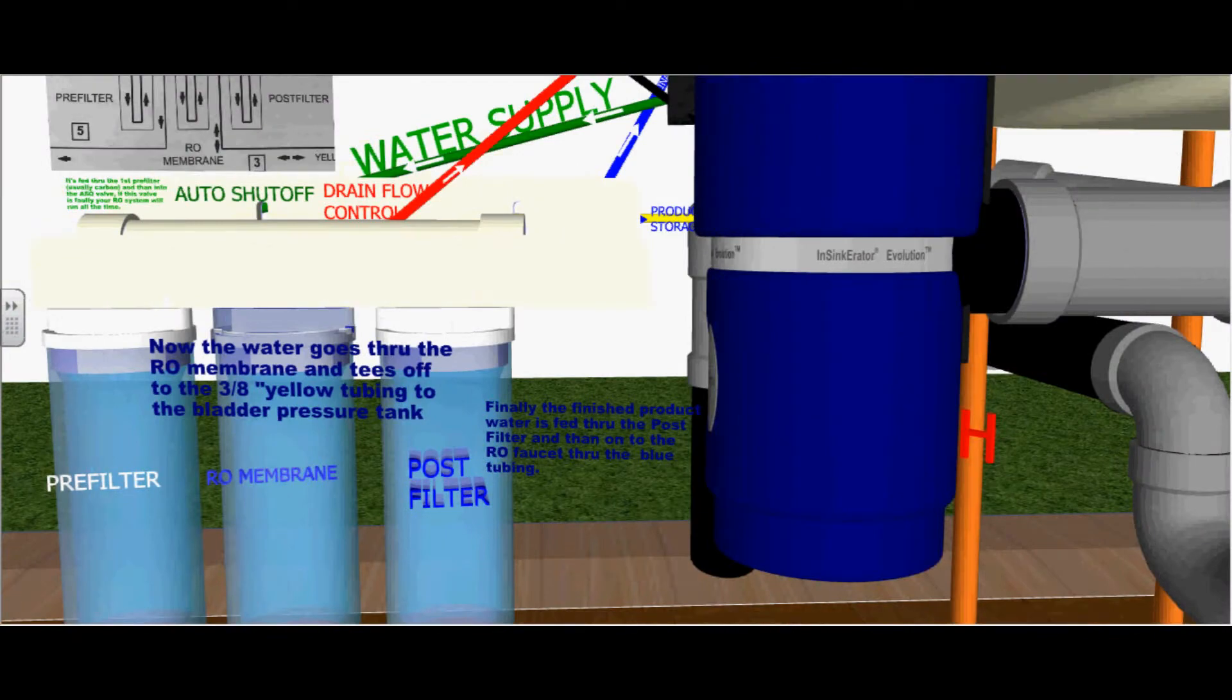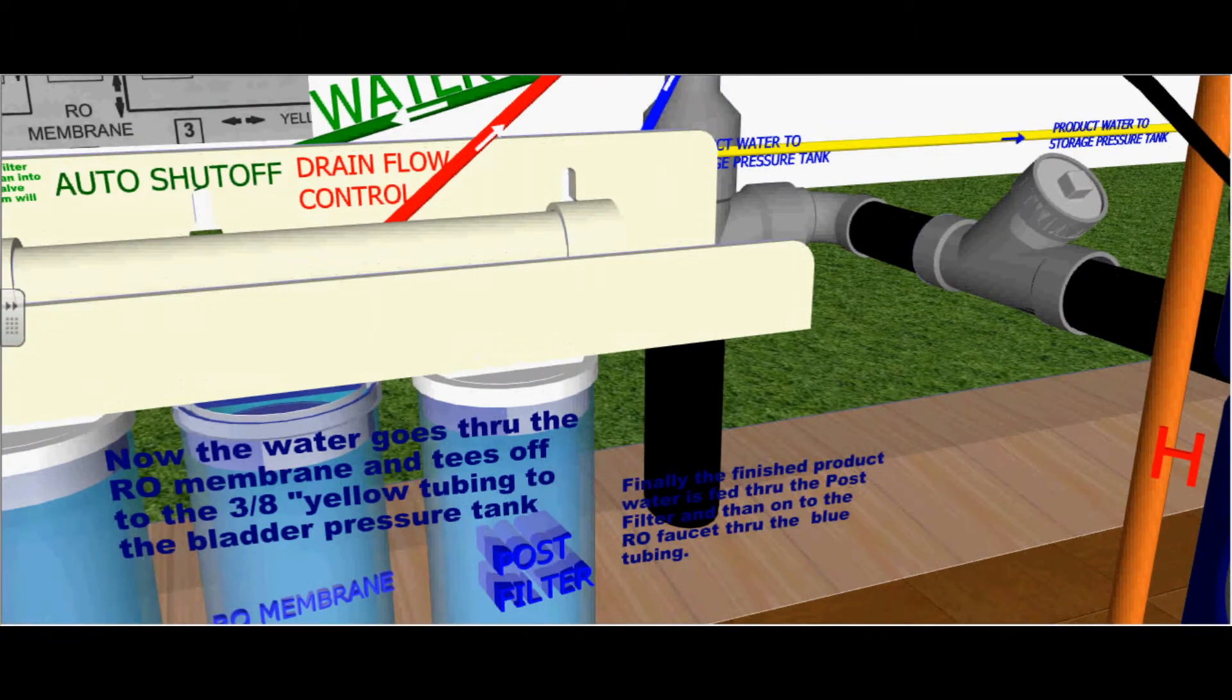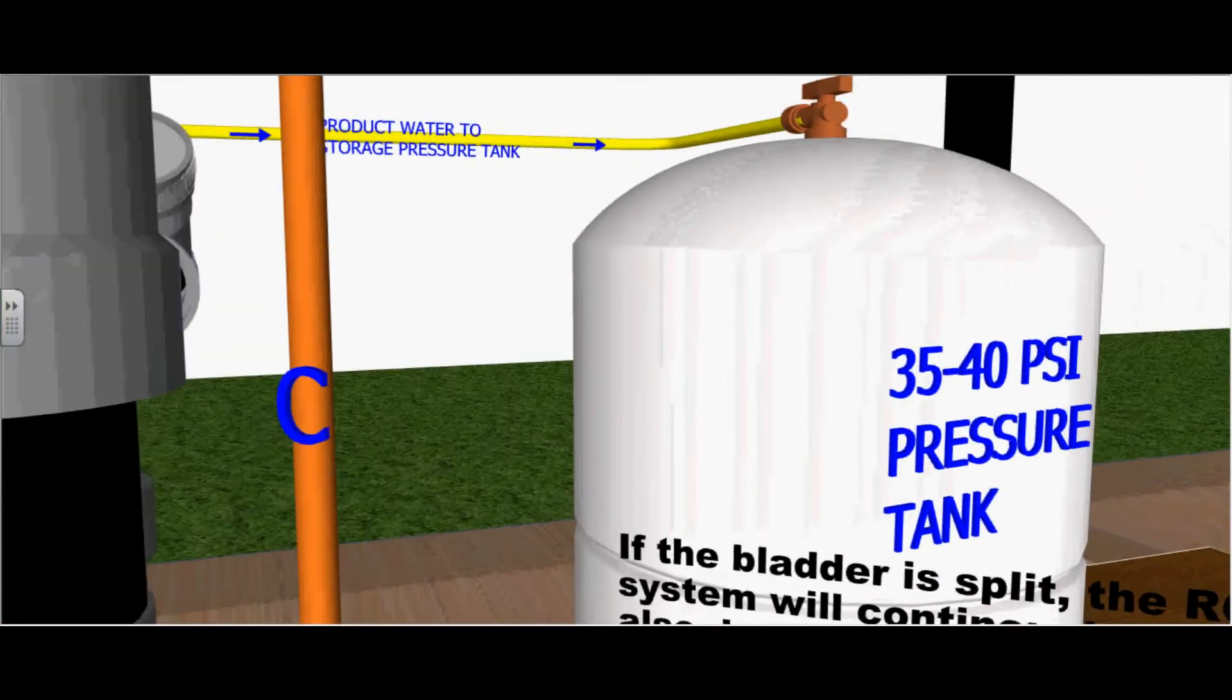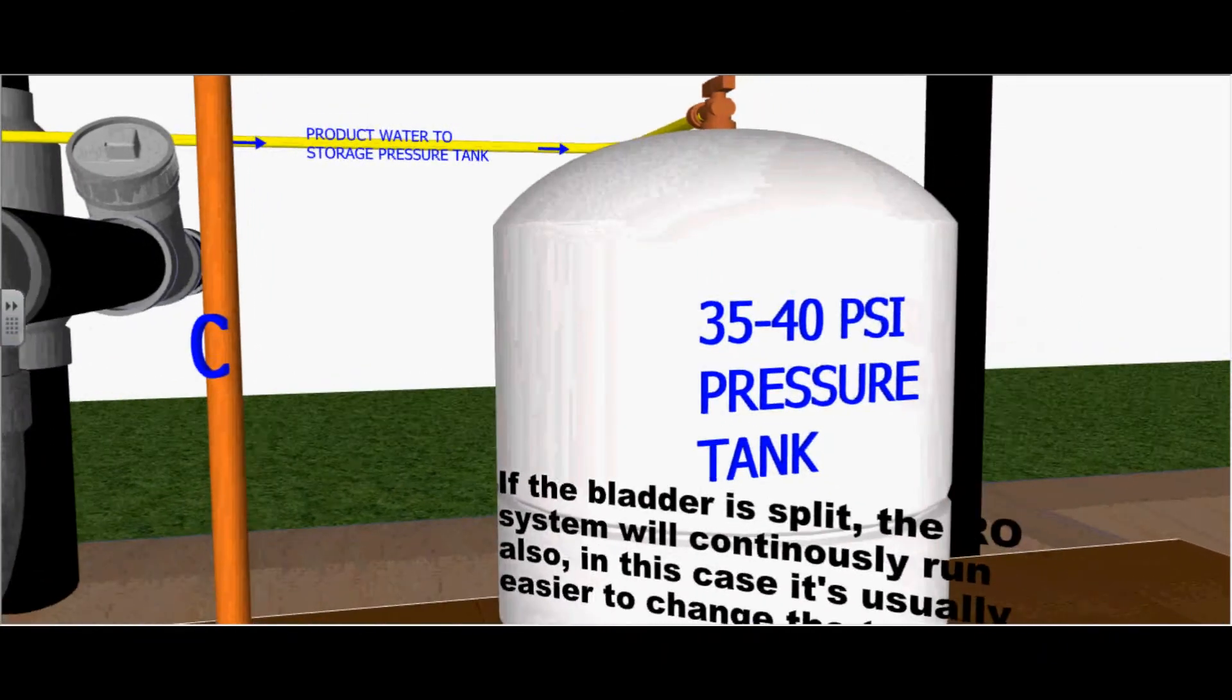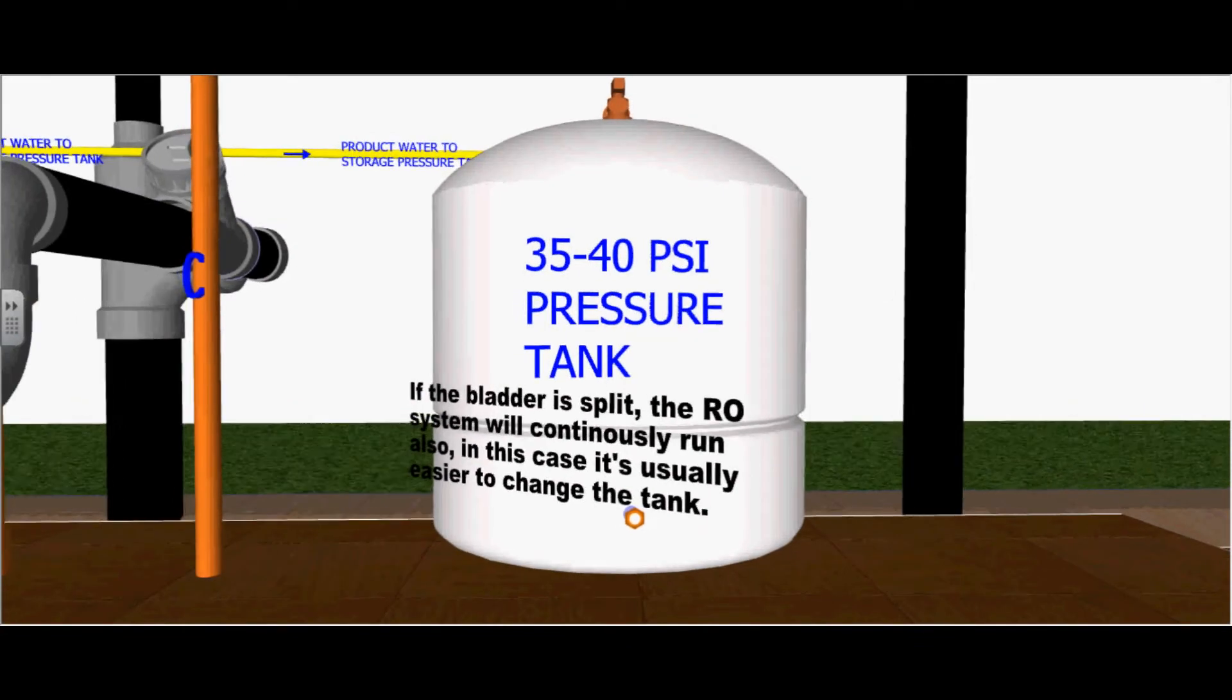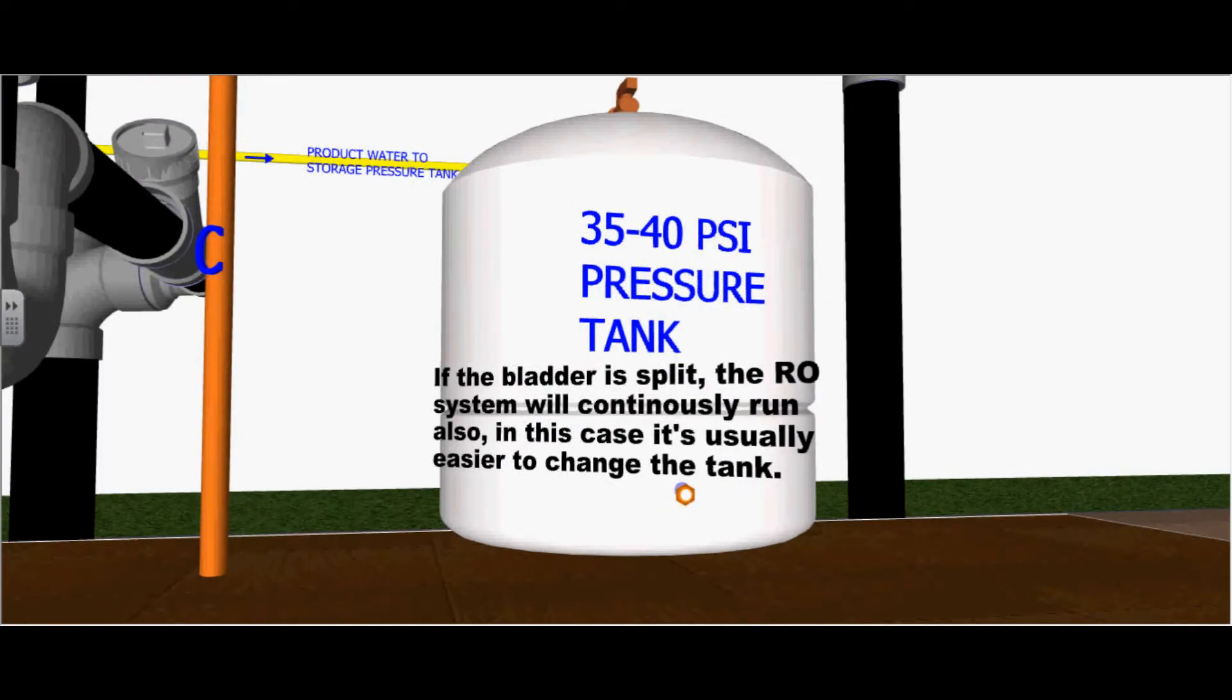Now the water goes through the RO membrane and tees off to the 3-8 yellow tubing to the bladder pressure tank. So let's follow that yellow tubing as it goes into our pressure tank, which is typically at 35 to 40 PSI. If the bladder in this tank is split, the RO system will continuously run also. In this case, it is easier to change the tank.